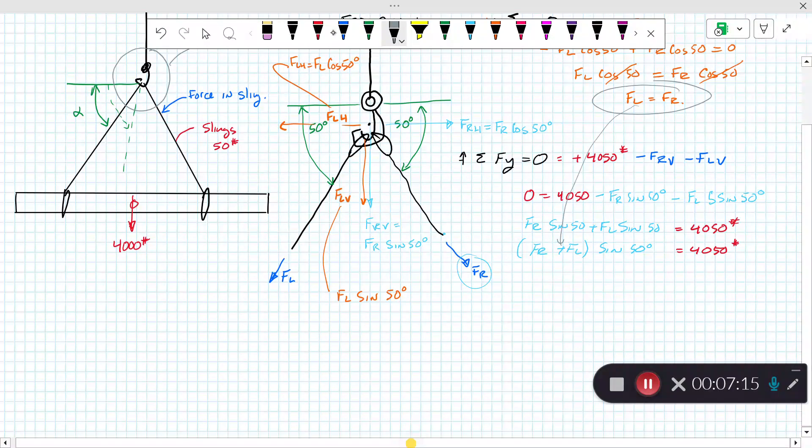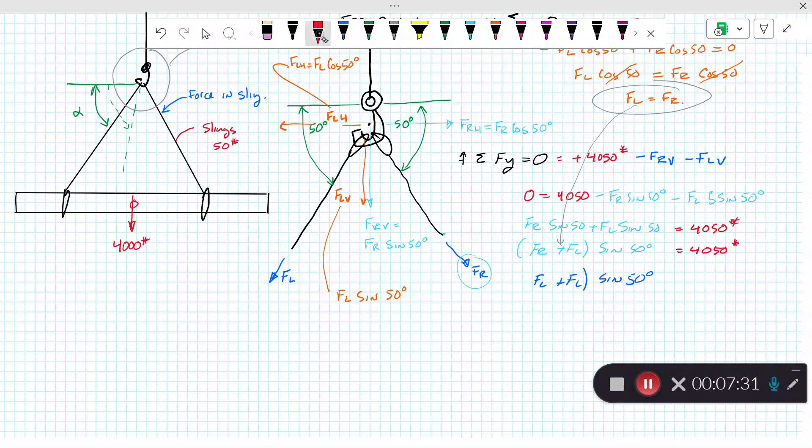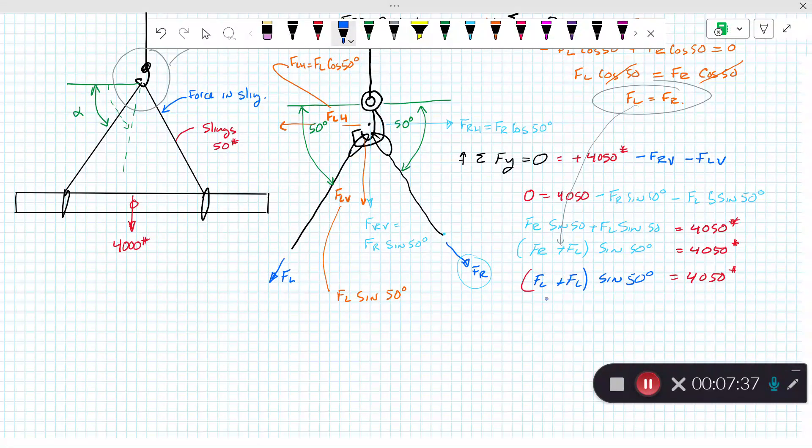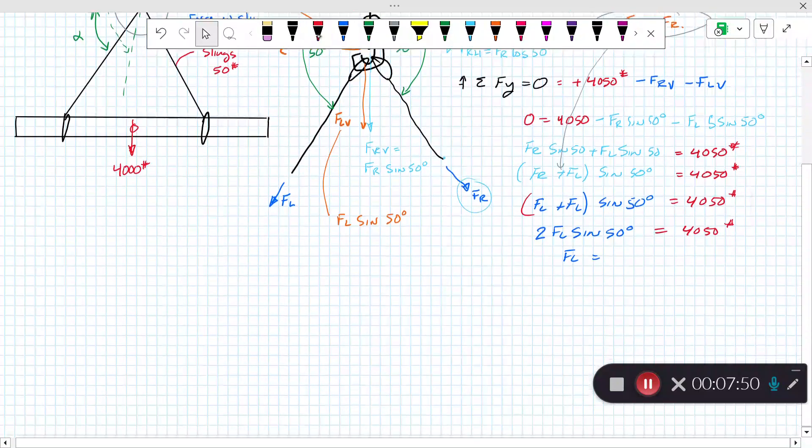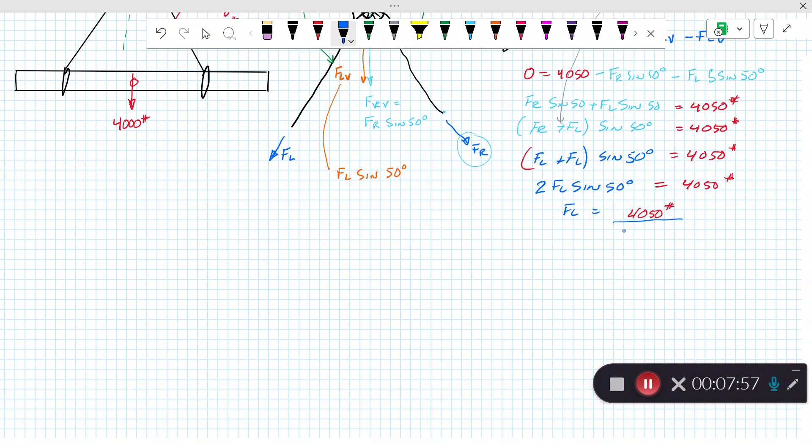Let's substitute FL in for FR and I get FL plus FL sine of 50 degrees equals 4,050 pounds. So that's 2FL sine of 50 degrees equals 4,050 pounds. Therefore, FL is equal to 4,050 pounds divided by 2 sine of 50 degrees.